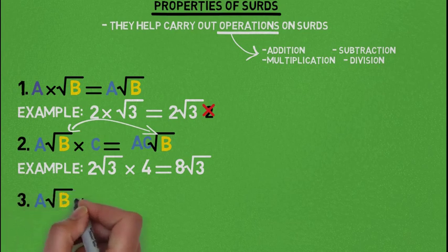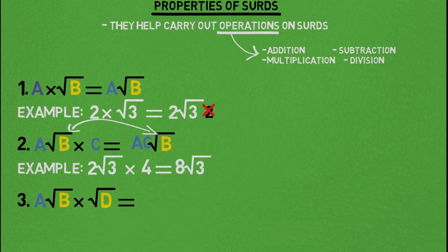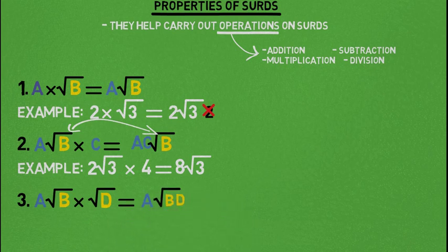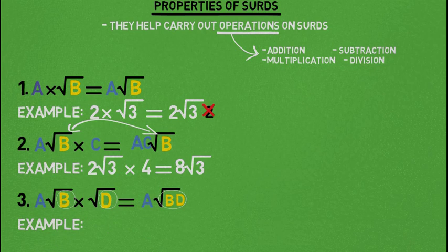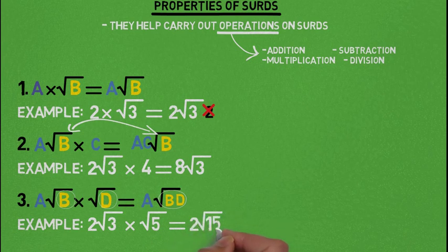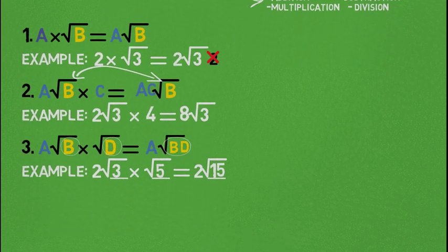Property number 3: A root B multiplying root D gives A root of BD. Whenever two root signs multiply, the values inside the root signs multiply. B multiplies D to give BD, and A remains outside. An example is 2 root 3 times root of 5, which gives us 2 root 15, where we got 15 by multiplying 3 and 5.